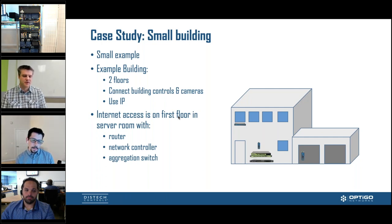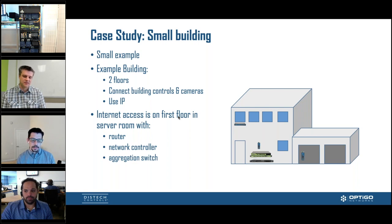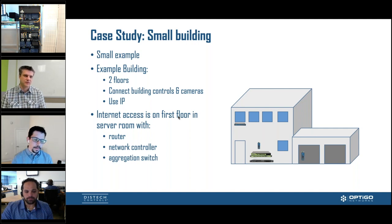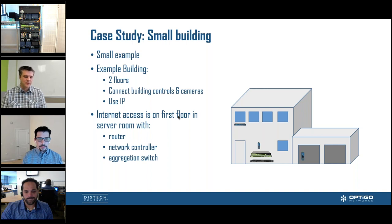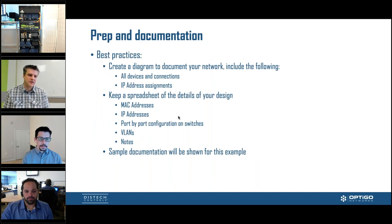Let's get into network design. We're doing a case study with a small building — a two-story building. On the first floor we have the main floor office, where our server room will be, and a warehouse. On the second floor we have offices. We need to connect everything up, including building controls, cameras, and all of that using IP. Now let's talk about prep — in real life you're going to have quite a large number of switches and devices to prepare and document.